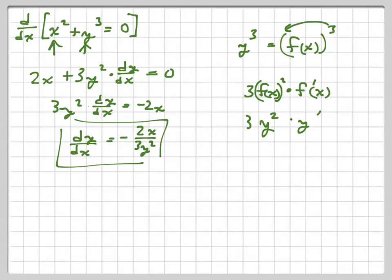And we can, instead of writing y prime, you can write 3y squared times dy over dx. That's the derivative of y with respect to x. So that's implicit differentiation. When we're taking that derivative with respect to x, we could do this a different way.